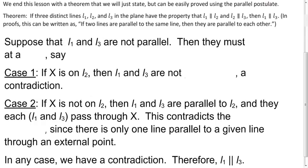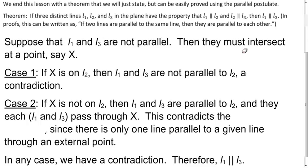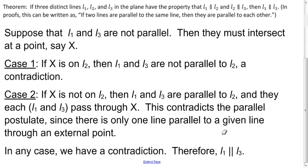Suppose the conclusion is false — L1 and L3 are not parallel, so they intersect at some point X. Two cases: if X is on L2, then L1 and L3 both cross L2 at X, meaning they're not parallel to L2 — a contradiction. If X is not on L2, then L1 and L3 are both parallel to L2 and both pass through external point X — but this contradicts the parallel postulate, since only one line through an external point can be parallel to a given line. In both cases we have a contradiction, so the lines must be parallel.